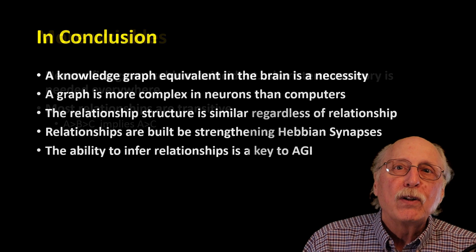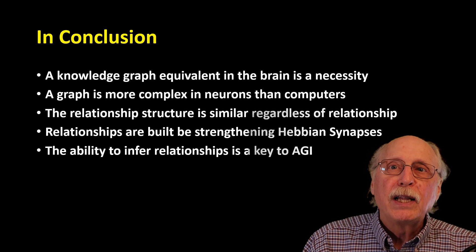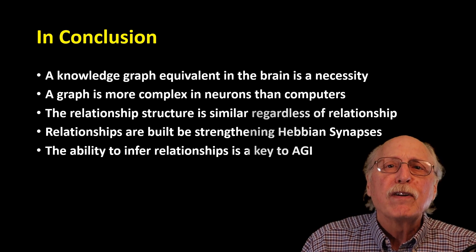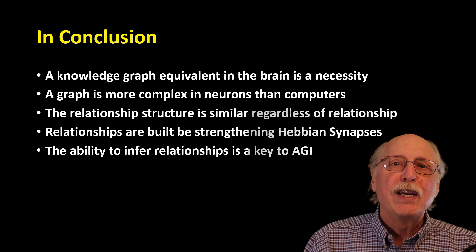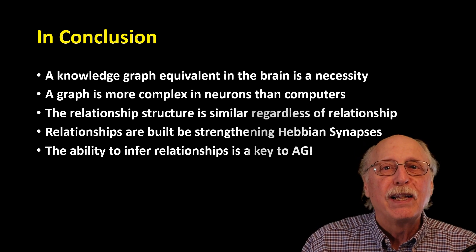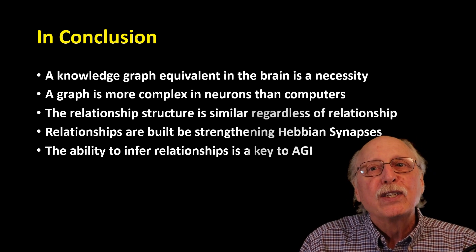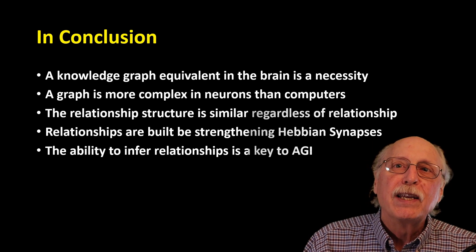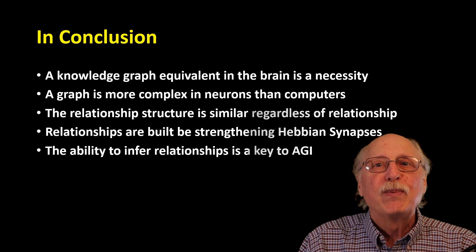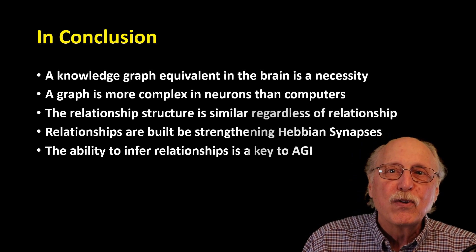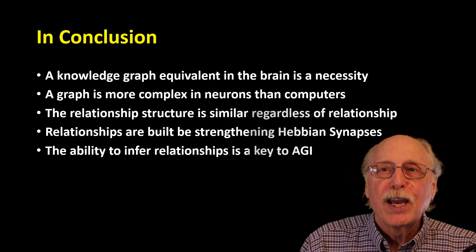We can draw a number of conclusions from the information I've presented in this video. First, a knowledge graph, or some sort of equivalent structure, is necessary in the brain because you can answer the same types of questions that can be addressed by the knowledge graph. Creating such a graph in neurons, however, is immensely more complicated than it is in a computer. This observation has huge implications for the amount of computer power needed for AGI, because the computer is much more efficient at this type of operation.